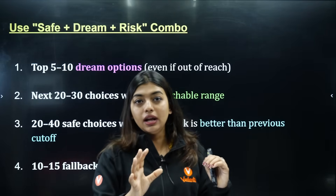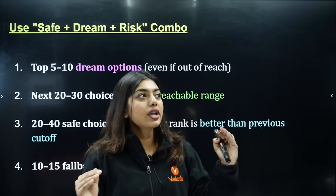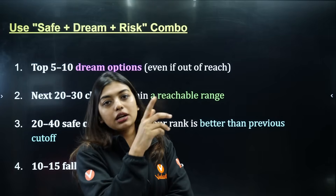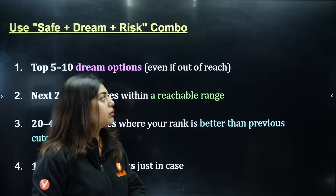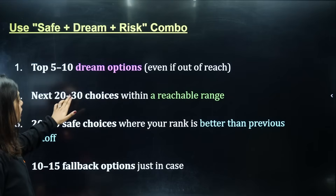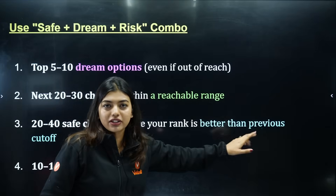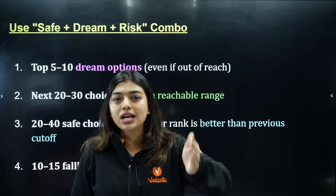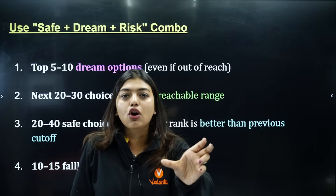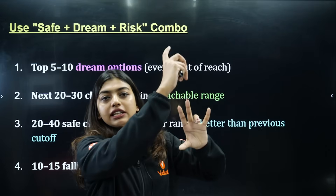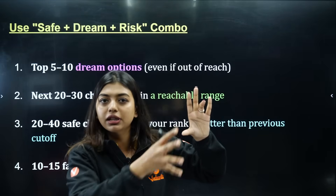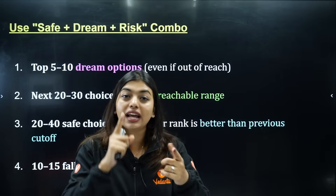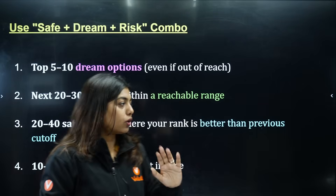If the variation is one lakh or one and a half lakh, don't waste choices there. Instead, look at colleges whose closing rank is around your range — if last year they closed at 1 lakh and you have 1 lakh 20 thousand, you can try that. But don't make unrealistic plans. The next 20 to 30 choices should be within a reachable range based on last year's cutoff.